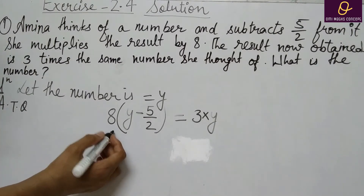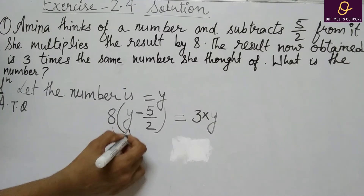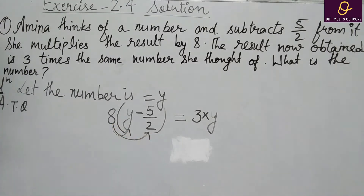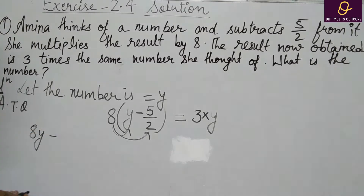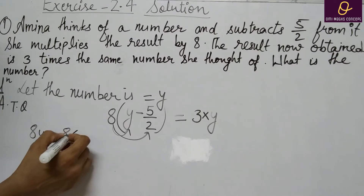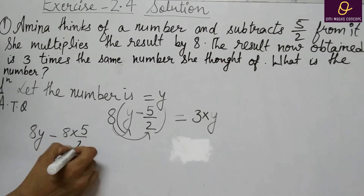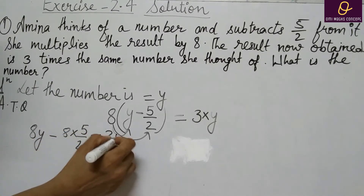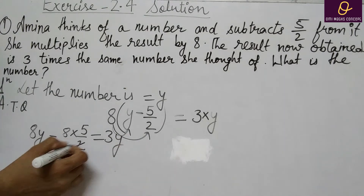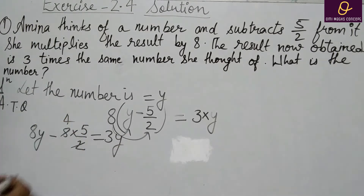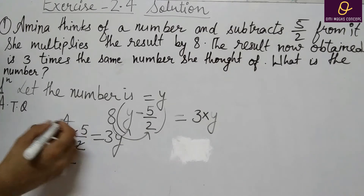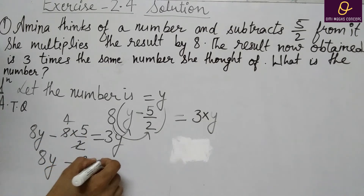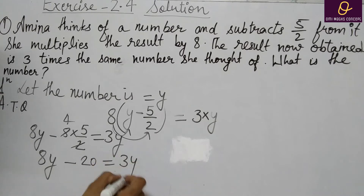So you will use distributive property. 8 multiply by y, minus 8 multiply by 5 by 2, is equal to 3y. 8y minus 8 into 5 by 2 is equal to 3y. 2 cancels 2, giving 4. So 8y minus 20 is equal to 3y.